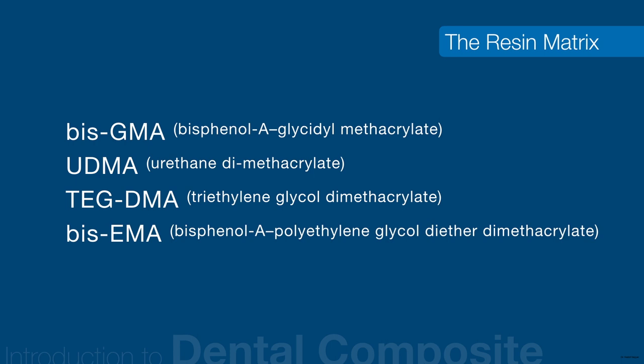Some manufacturers add TEGDMA (triethylene glycol dimethacrylate), a low-viscosity resin used as a diluent, such as in flowable composites. Formulations using Bis-EMA (bisphenol A polyethylene glycol diether dimethacrylate or oxy-bismethacrylate) monomers cyclopolymerize — the chain-like molecules, upon curing, open into a more linear way and cross-link with adjacent chains. This influences overall handling properties and holds promise to reduce overall volumetric shrinkage.